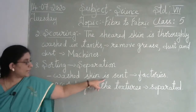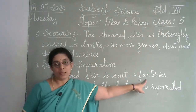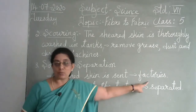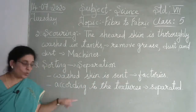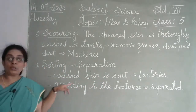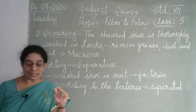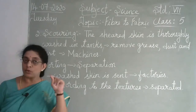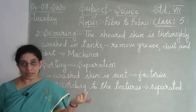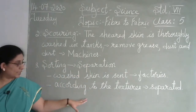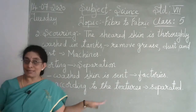The washed skin is sent to factories, where it is separated according to texture — texture meaning the feel of the material, whether it is soft, silky, or rough. They separate it depending on texture. That is the third step.